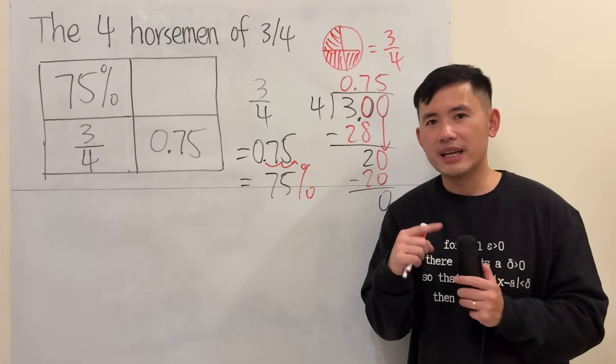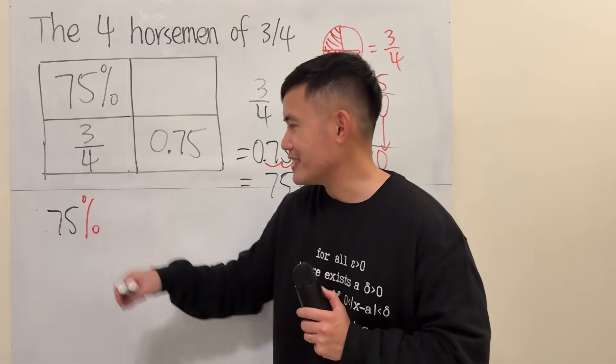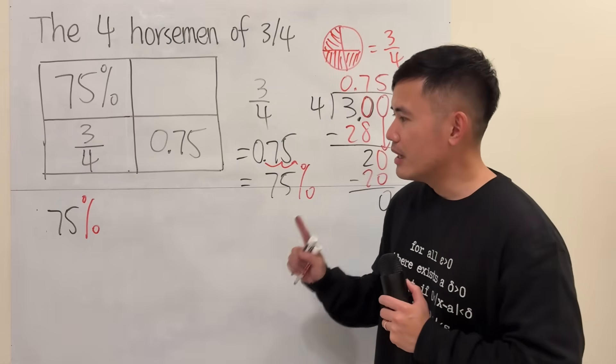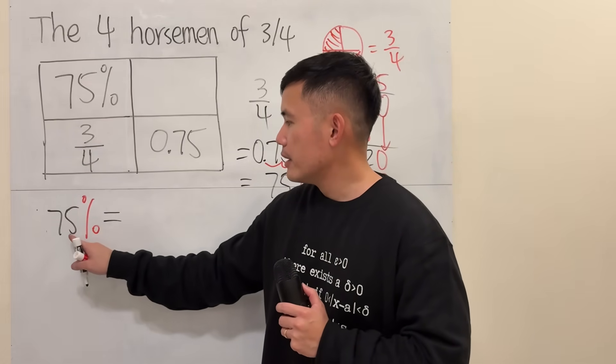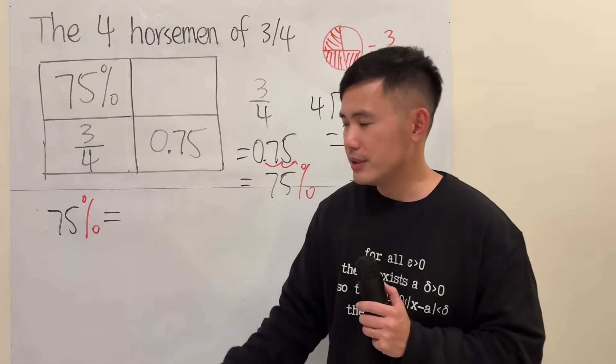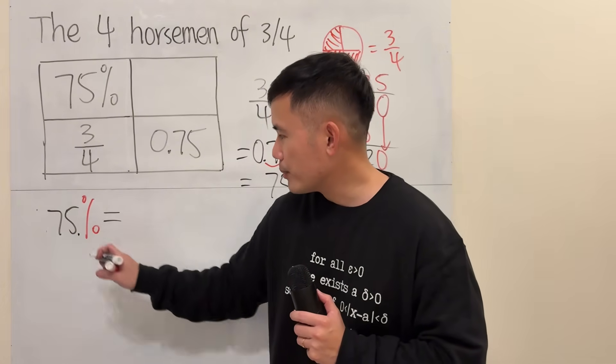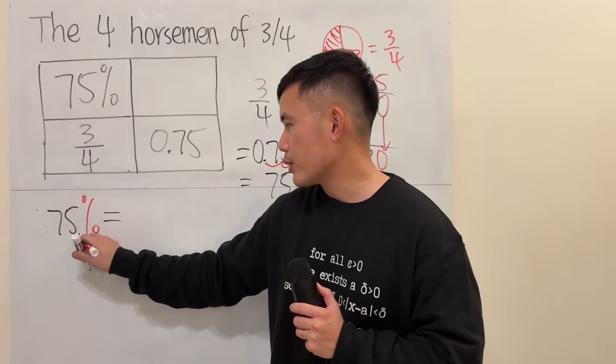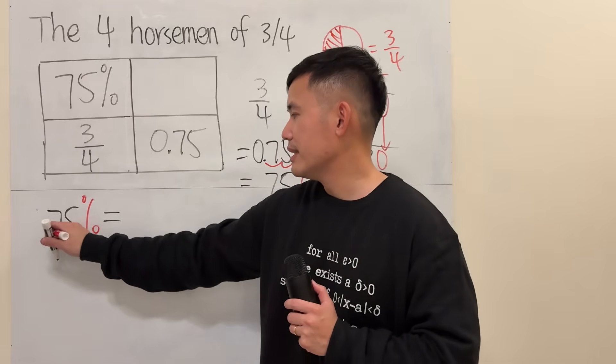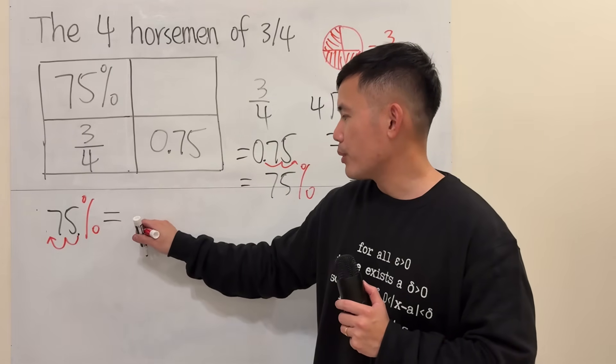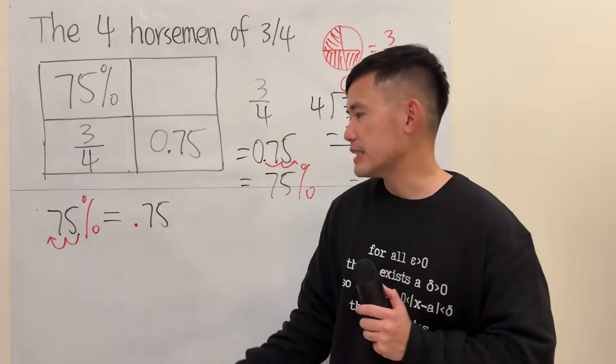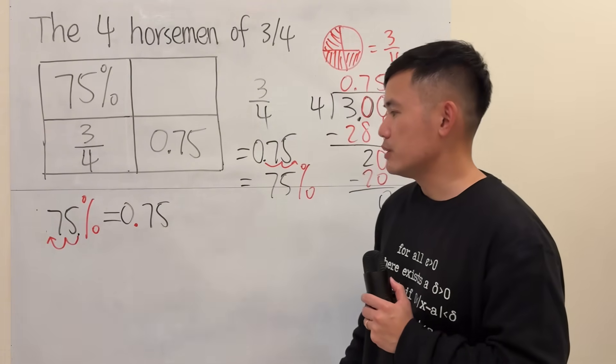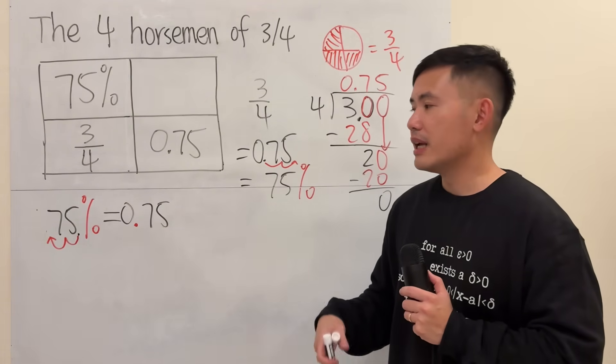Now, if you have another way around, let's see. If you have 75%, get to decimal first. To get a decimal, 75 is a whole number. It's like a decimal point here. Then you move the decimal point twice to the left. And it's right there. So you have 0.75. And the 0 before the decimal point doesn't matter. So you can attach the 0 like that. That's fine.